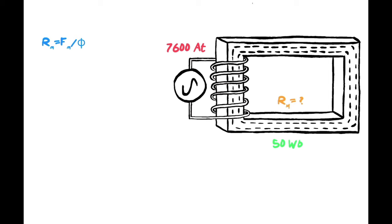As always, the best thing we can do is let's throw some numbers at it. I've got an MMF I'm creating with this current flowing through these number of turns, creating 7600 ampere turns. Let's say that creates 50 webers of flux. That's actually quite a bit of flux when you think about it, because each weber has 100 million lines of flux to it.